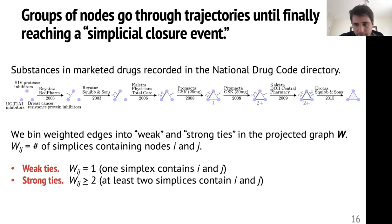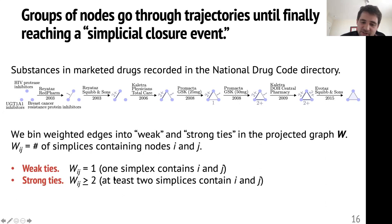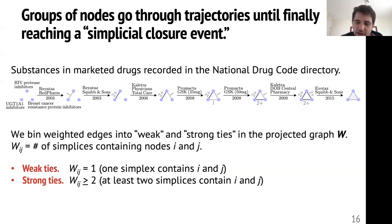Something very useful for our analysis was bending the edge weights — the number of times that two nodes have appeared in some simplex together — into what we call weak or strong ties. For mathematical purposes, a weak tie is one where the edge weight is equal to one, meaning there's exactly one simplex containing these two nodes. A strong tie has an edge weight of at least two — at least two simplices contain nodes i and j. You can encode this in a weighted graph W.